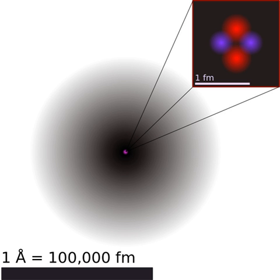The way the atomic radius varies with increasing atomic number can be explained by the arrangement of electrons in shells of fixed capacity. The shells are generally filled in order of increasing radius, since the negatively charged electrons are attracted by the positively charged protons in the nucleus. As the atomic number increases along each row of the periodic table, the additional electrons go into the same outermost shell, whose radius gradually contracts due to the increasing nuclear charge. In a noble gas, the outermost shell is completely filled; therefore, the additional electron of the next alkali metal will go into the next outer shell, accounting for the sudden increase in the atomic radius. The increasing nuclear charge is partly counterbalanced by the increasing number of electrons, a phenomenon known as shielding, which explains why the size of atoms usually increases down each column.